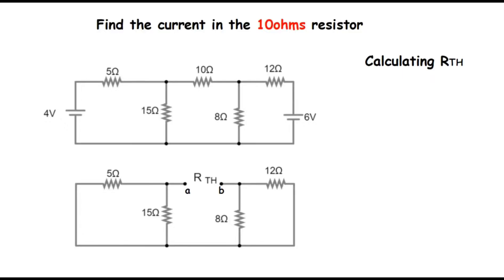Let's try this example. We have to find the current in the 10 ohms resistor. I'm going to calculate for the Thevenin resistance. If there are voltage sources, I have to short circuit them, and if there are current sources, I have to open circuit them. In this case I have two voltage sources: the 4 volt source and the 6 volt source, so I'm going to short circuit both. After short circuiting them, I take out the load resistor which is the 10 ohms resistor.